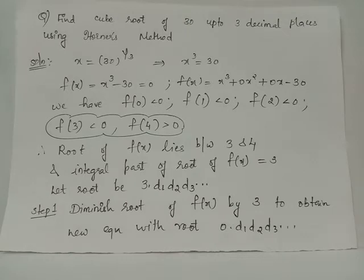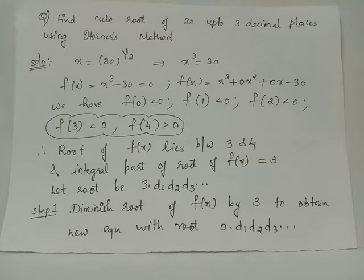Find the cube root of 30 up to three decimal places using Arna's method. We have the equation x = 30^(1/3) to find the cube root of 30. Taking the cube on both sides gives x³ = 30, which can be rewritten as x³ - 30 = 0. Let f(x) = x³ - 30, written as x³ + 0x² + 0x - 30. The coefficients of x² and x are specified as 0 because this will be helpful when using the synthetic division method.